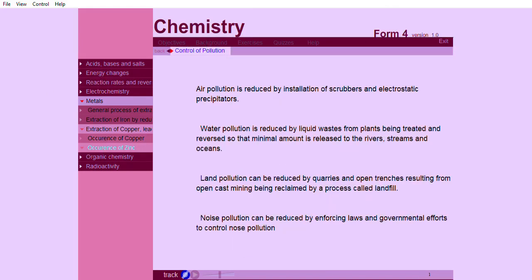Air pollution is reduced by installation of scrubbers and electrostatic precipitators. Water pollution is reduced by liquid wastes from plants being treated and reversed so that minimal amount is released to the rivers, streams, and oceans.